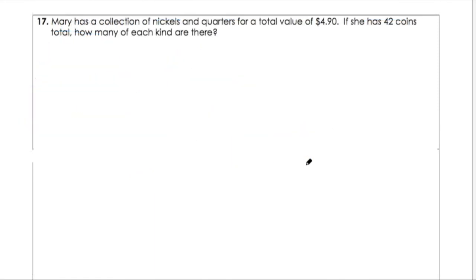Let's look at one more example here together. In this example, it says Mary has a collection of nickels and quarters for a total value of $4.90. If she has 42 coins total, how many of each kind are there? Very similar problem, except that now we have nickels and quarters.